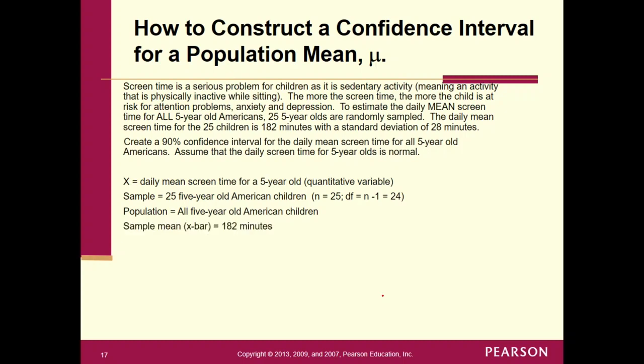Sample mean, I think we've already established that that's 182. What about this 28? So this value right here says with a standard deviation of 28. Would that be sigma or is that s? Think about it. Is it the population standard deviation or is it the sample standard deviation? It says here the daily mean screen time for 25 children is 182 minutes with the standard deviation of 28. So this standard deviation is coming from a sample. So it's the sample standard deviation. So hopefully you said that s is 28 minutes.